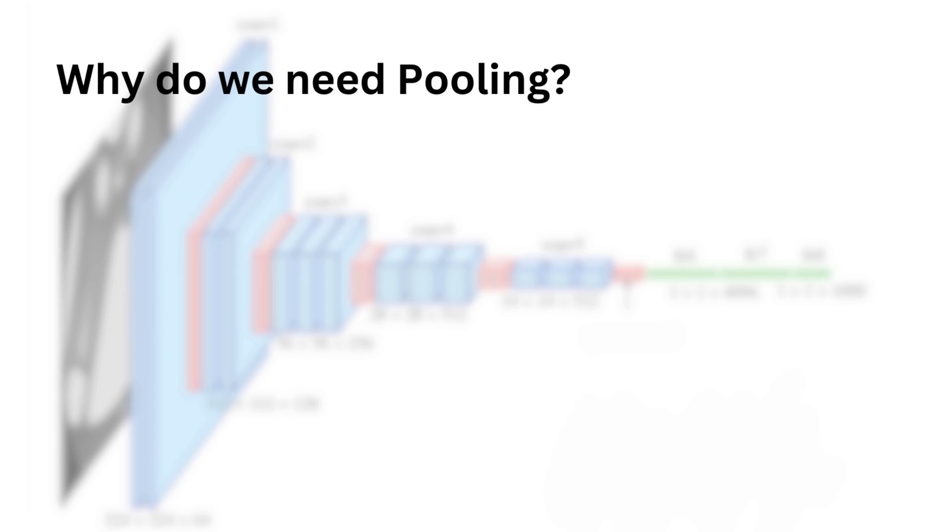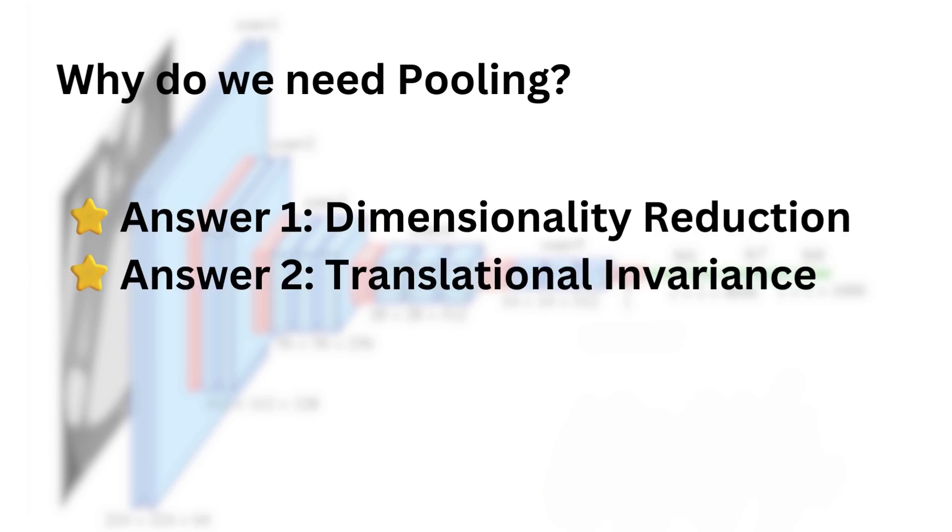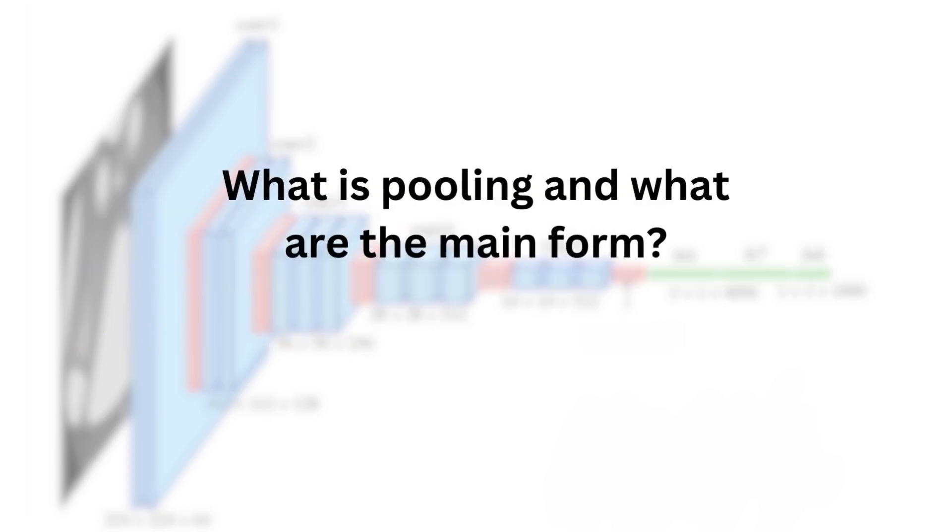The three main answers to this question we'll explore are the following. Pooling helps with dimensionality reduction throughout the network. It allows the network to have translational invariance. And finally, it allows the deep learning architect to make some very useful changes at the end of a CNN. First, let's take a look at what is the pooling operation and what are the main forms it takes.